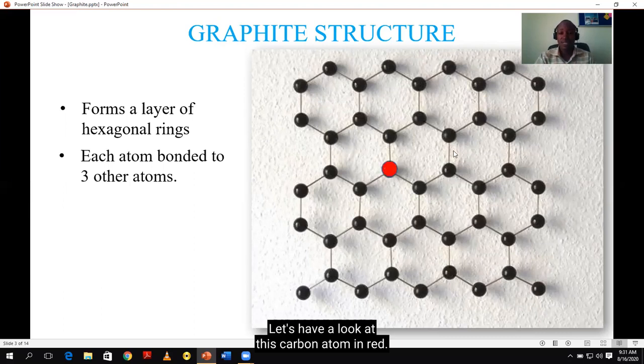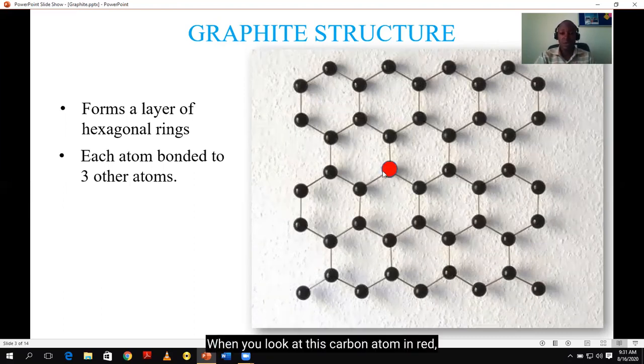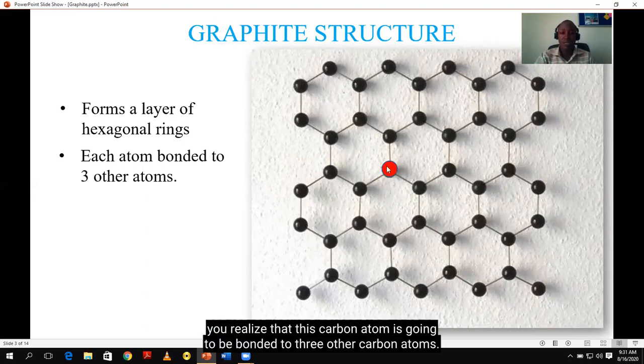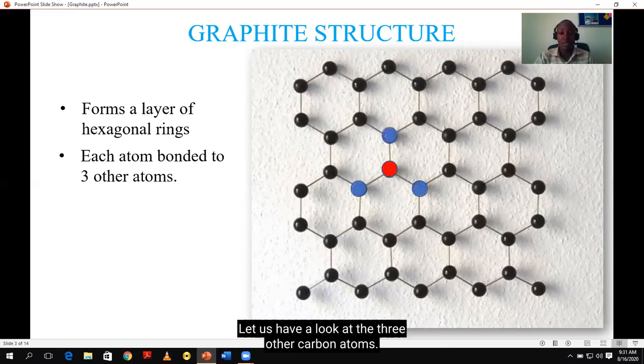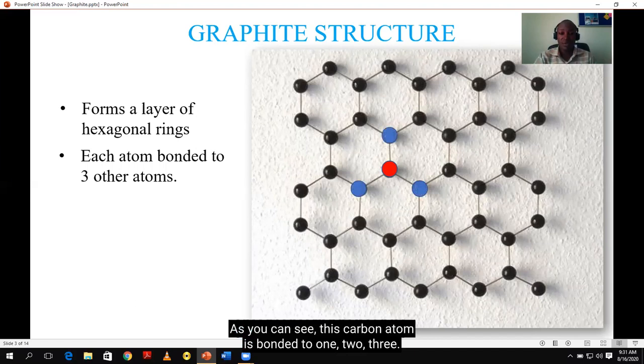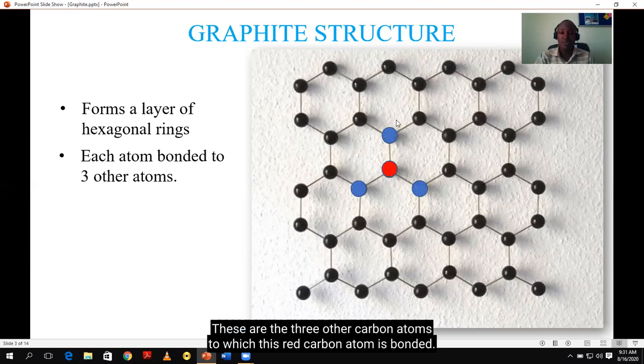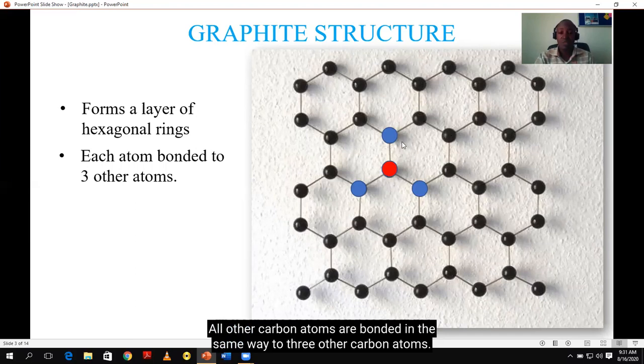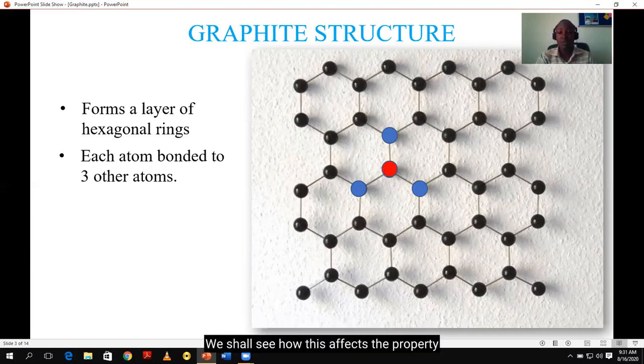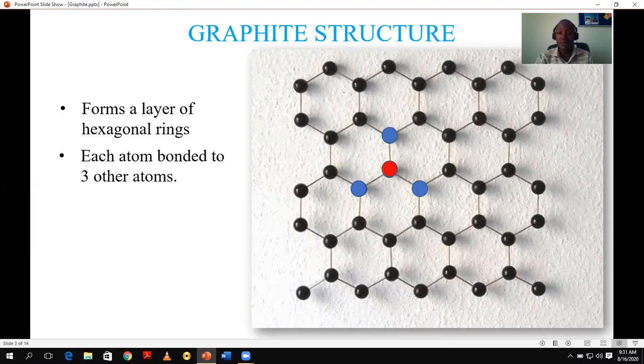Let's have a look at this carbon atom in red. When you look at this carbon atom in red, you realize that this carbon atom is going to be bonded to three other carbon atoms. Let us have a look at the three other carbon atoms. As you can see, this carbon atom is bonded to one, two, three. These are the three other carbon atoms to which this red carbon atom is bonded. All other carbon atoms are bonded in the same way to three other carbon atoms. We shall see how this affects the property of graphite and enabling it to conduct electricity.